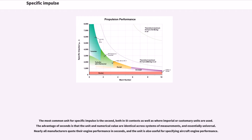The most common unit for specific impulse is the second, both in SI contexts as well as where imperial or customary units are used. The advantage of seconds is that the unit and numerical value are identical across systems of measurement and essentially universal. Nearly all manufacturers quote their engine performance in seconds, and the unit is also useful for specifying aircraft engine performance.